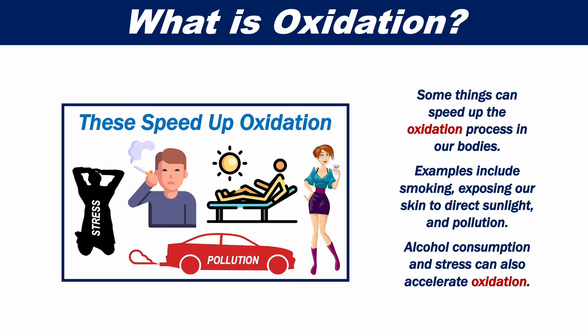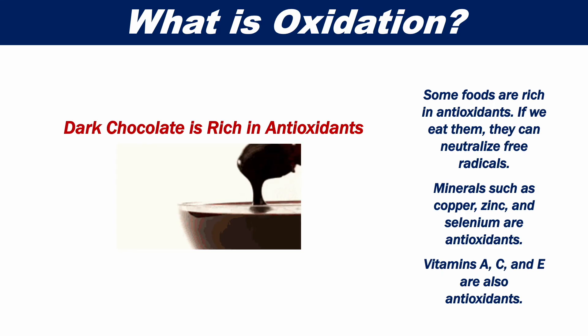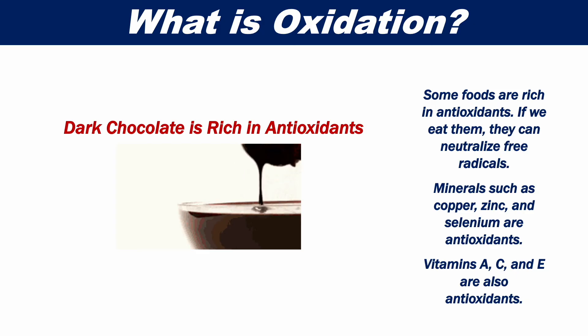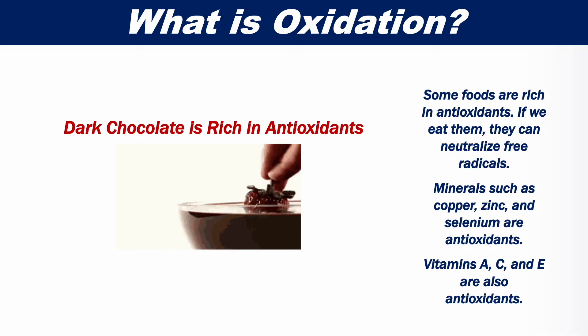Some things can speed up the oxidation process in our bodies, including smoking, exposing skin to direct sunlight, pollution, alcohol consumption, and stress. Some foods are rich in antioxidants — if we eat them, they can neutralize free radicals. Minerals such as copper, zinc, and selenium are antioxidants, and vitamins A, C, and E are also antioxidants.